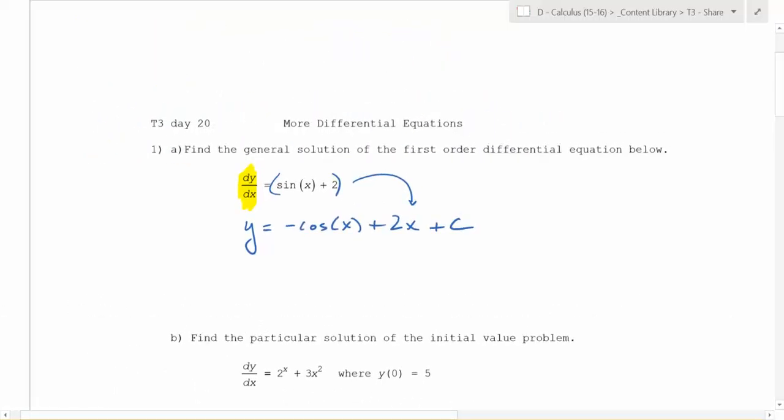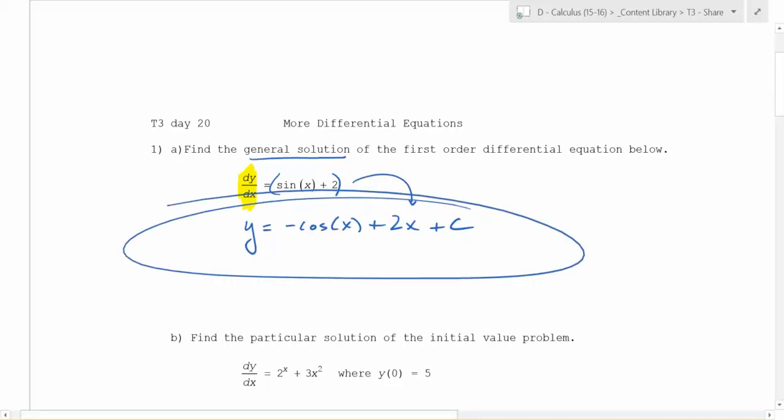So that is the general solution. When they say general solution, it means all the solutions. We don't have any sort of initial condition, so we can't tack this down. How many functions does this represent? An infinite number because of the constant. Because c could be anything.